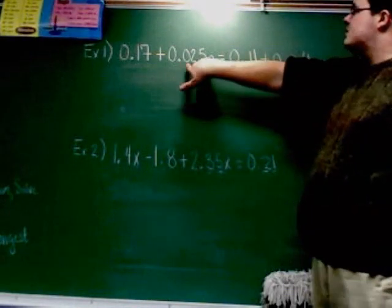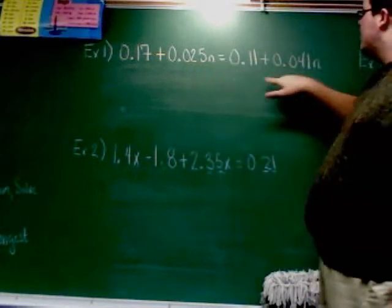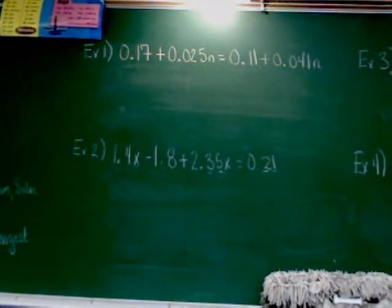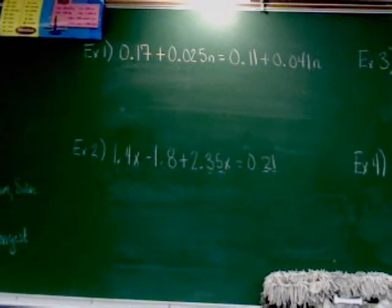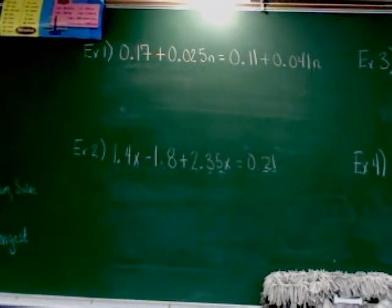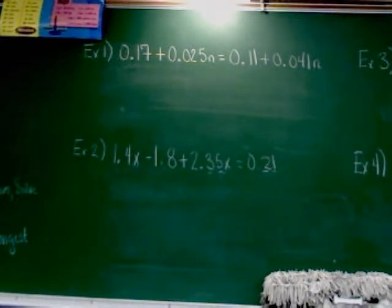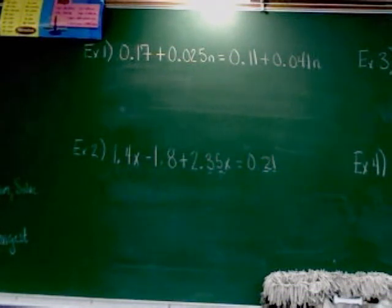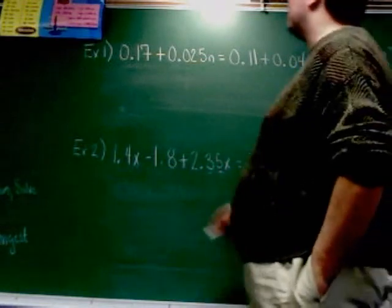If I look at all these decimals, 0.025 has three numbers after the decimal, and 0.041 also has three numbers after the decimal — a 0, a 2, and a 5, or a 0, a 4, and a 1. Whichever one is the longest, you're going to take the decimal and move it that number of places in every single part of the equation. The longest had three digits after the decimal, so in each part I'm going to move the decimal three places.